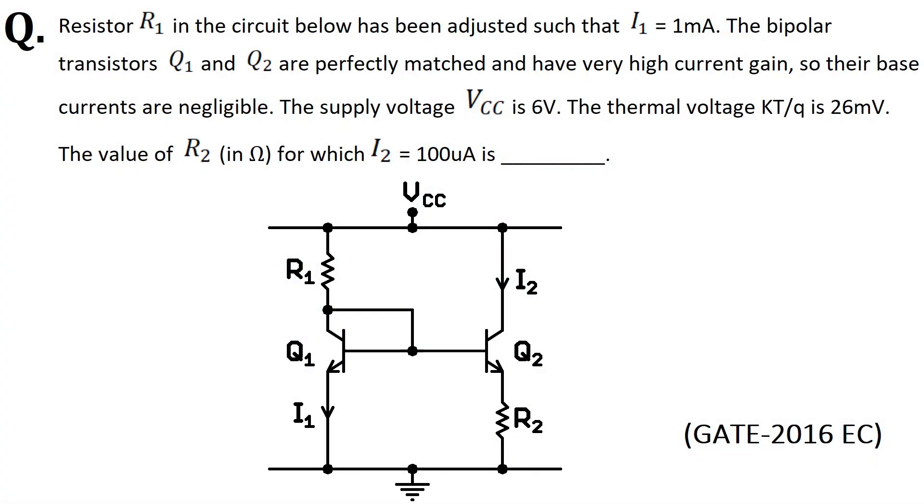Hey guys, welcome back to this tutorial. This time we have a question related to Widlar current mirror which was asked in GATE 2016. In this question, Q1 and Q2 are perfectly matched transistors, their beta is very large, and the value of current I1 and I2 are given.